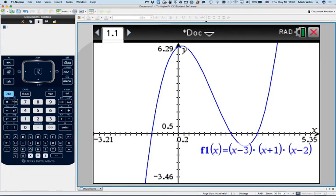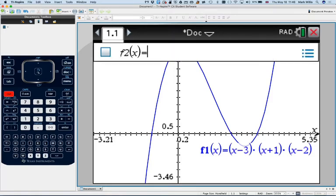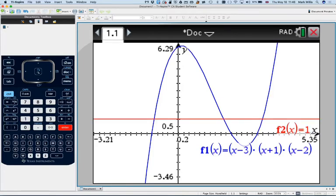Say you had the graph of y is equal to 1. Control G to bring up that and just enter 1. We can see that this graph intersects at three different points.